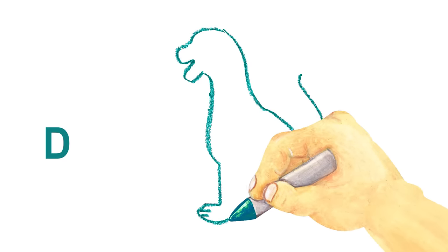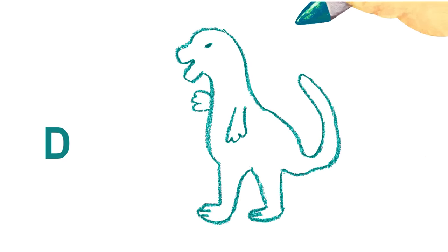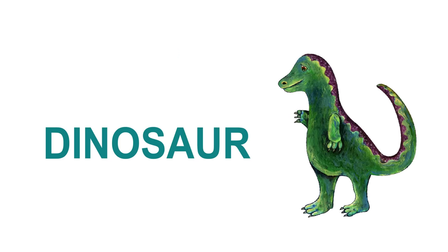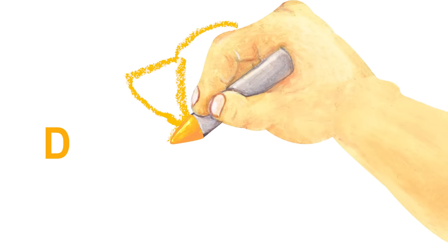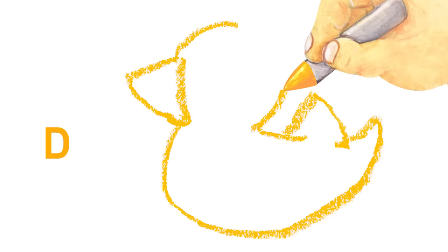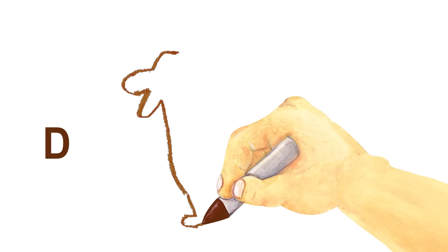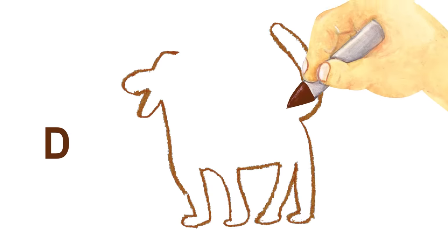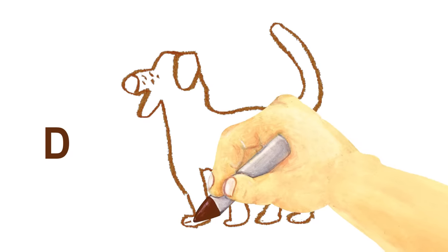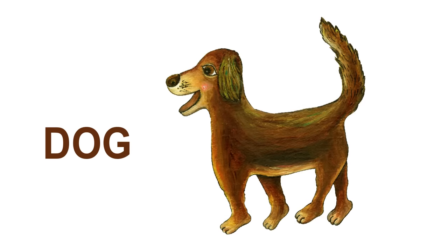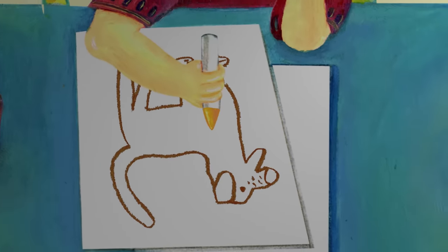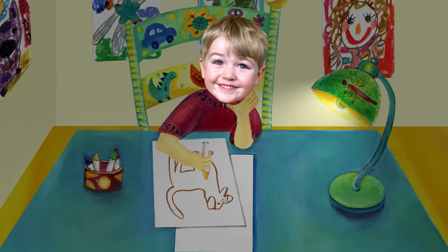Next comes the letter D. Let's draw some animals with names starting with D. What is this? This is a dinosaur. Let's draw another one starting with D. What about this? This is a duck. Quack, quack. How about this one? This is a dog. Woof! Woof! Let's see who's been drawing all these pictures. That's me. I've been drawing all the pictures.